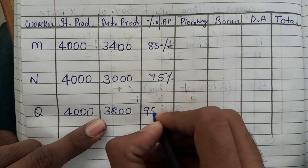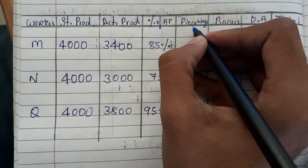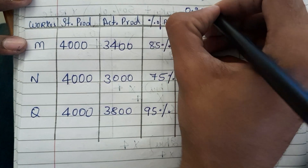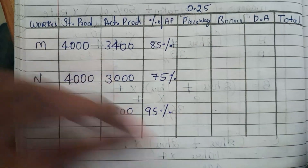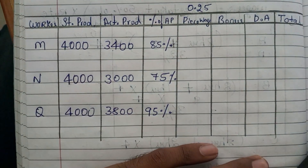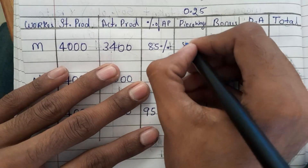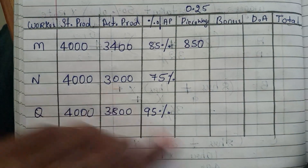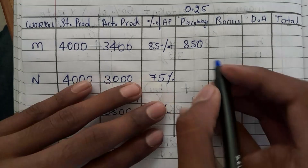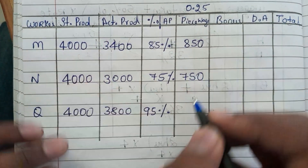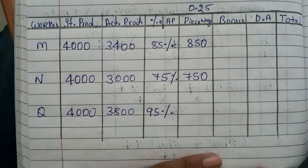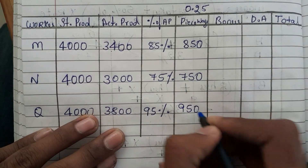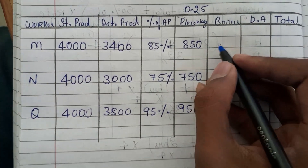The piece rate is calculated on actual production at 0.25 rupees per unit. So 3400 into 0.25 equals 850 rupees for M. Next, 3000 into 0.25 equals 750 rupees for N. Next, 3800 into 0.25 equals 950 rupees for Q.